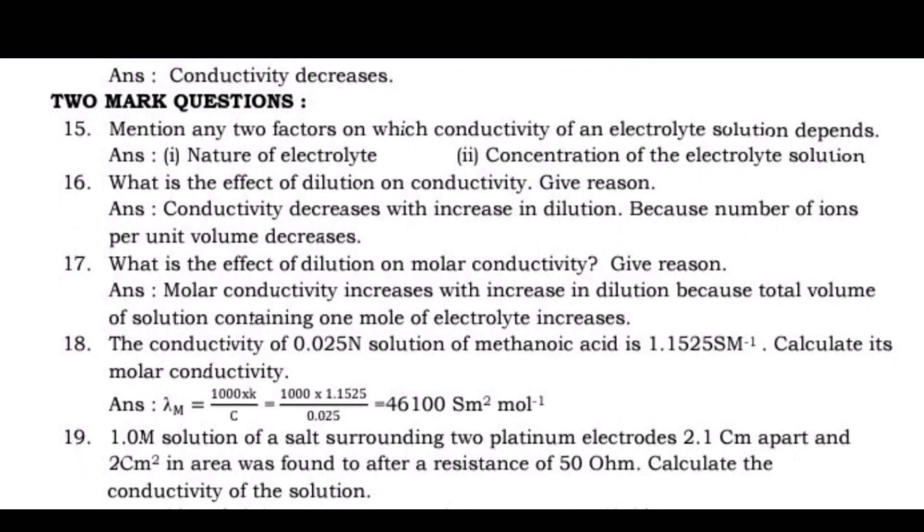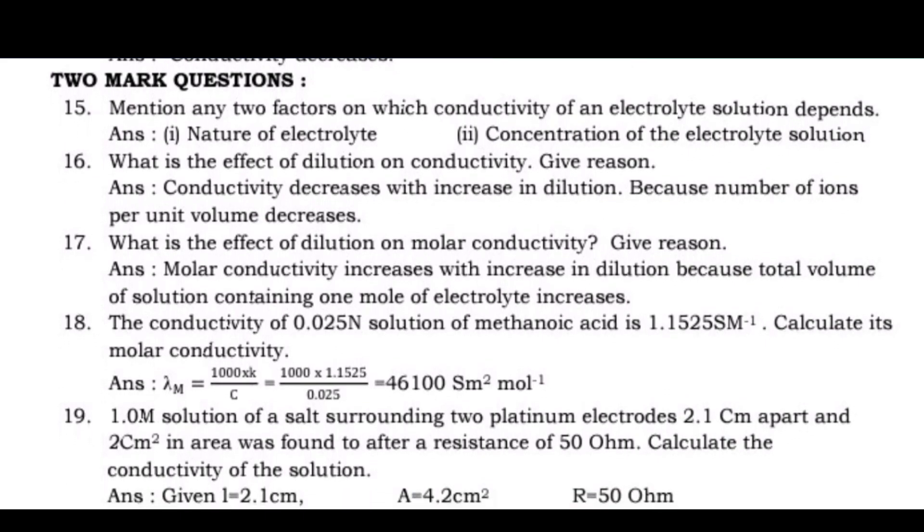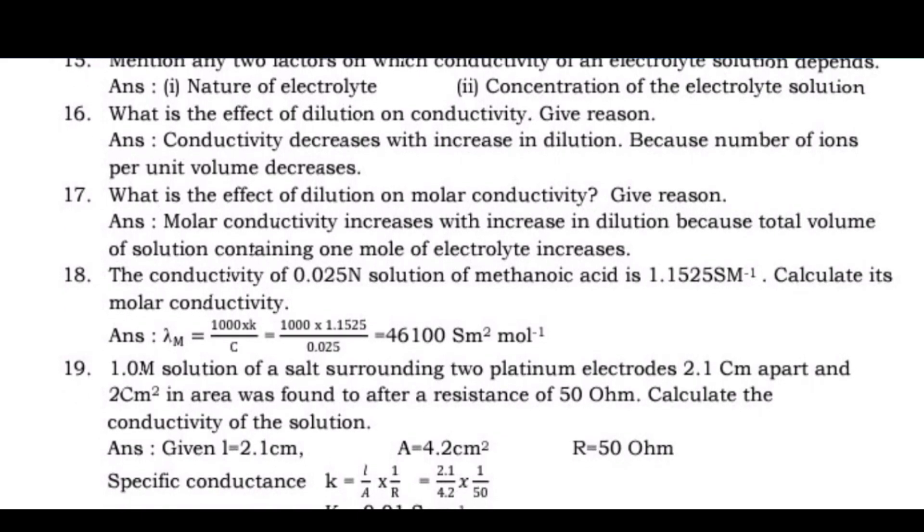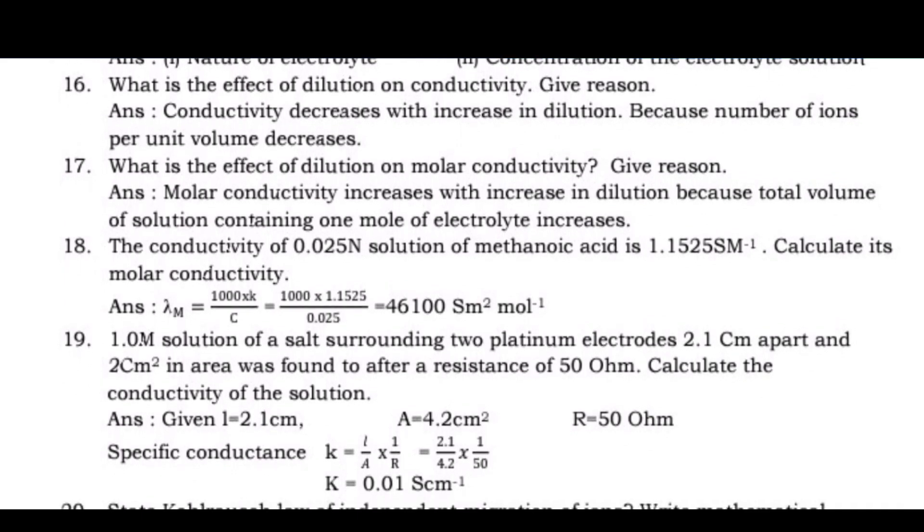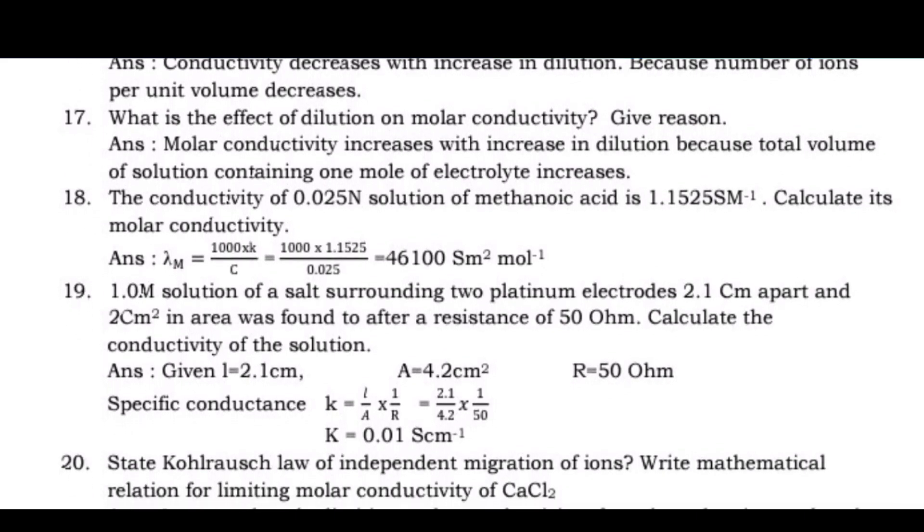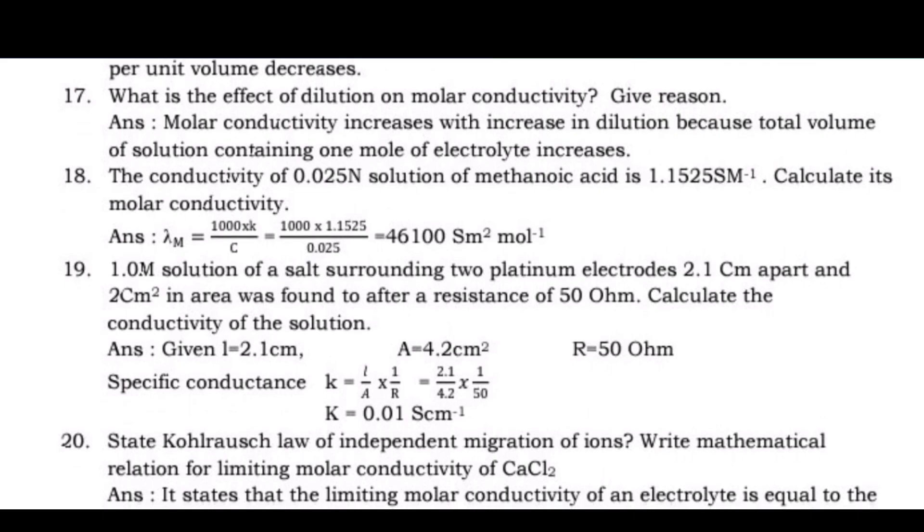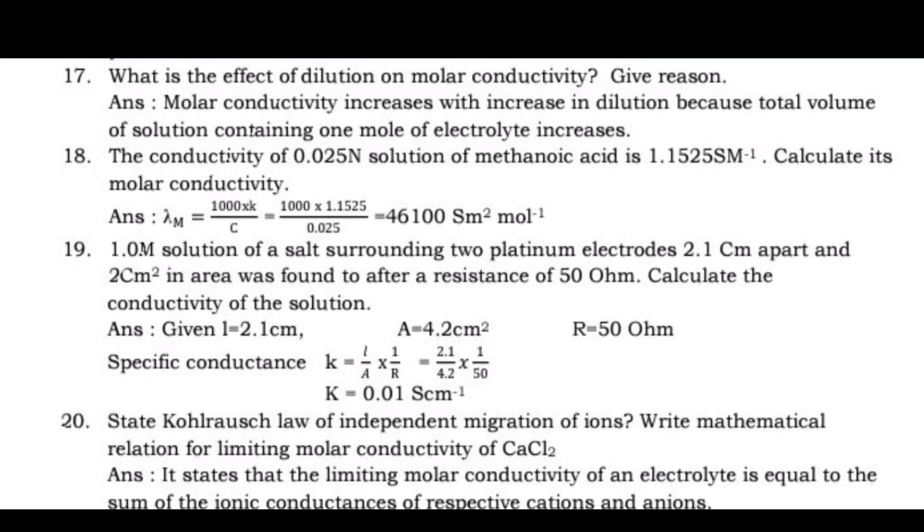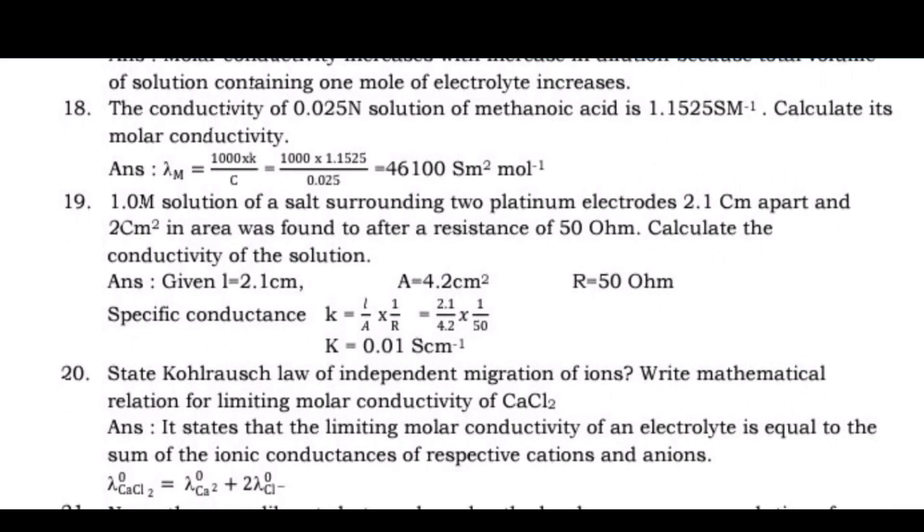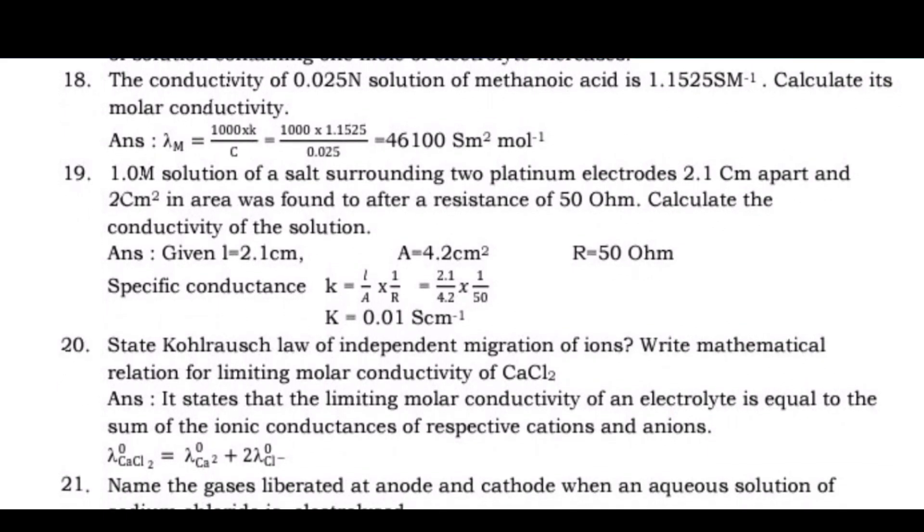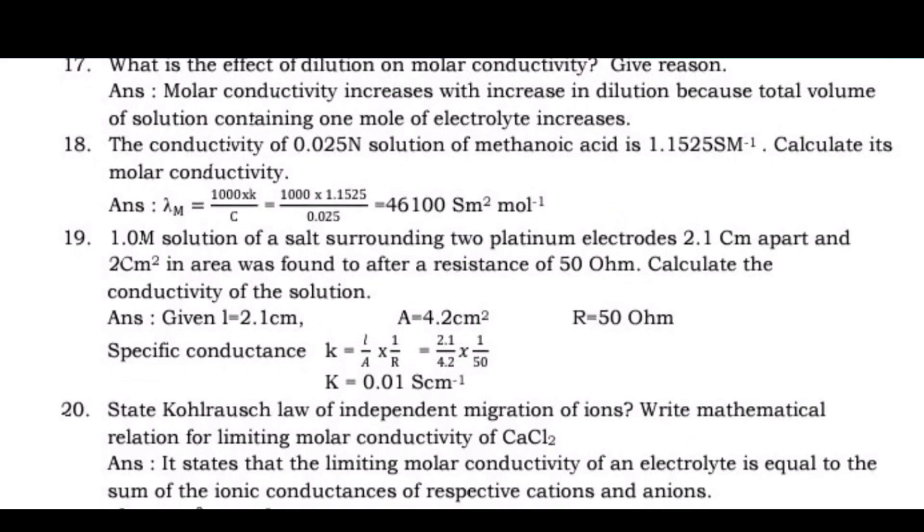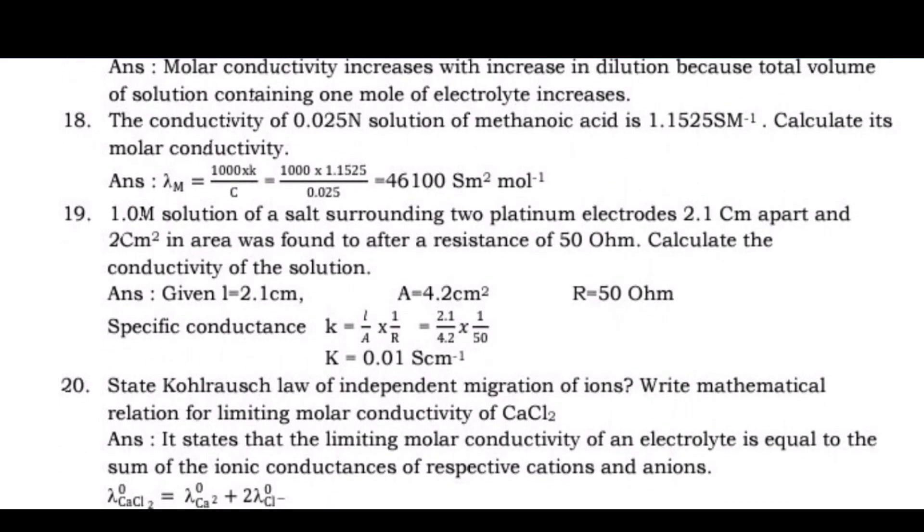Question 17: What is the effect of dilution on molar conductivity? Give reason. Answer: Molar conductivity increases with increase in dilution because total volume of solution containing 1 mole of electrolyte increases. Question 18: The conductivity of 0.025N solution of methanoic acid is 1.1525 Sm⁻¹. Calculate its molar conductivity. Answer: (1000 × 1.1525)/0.025 = 46100 Sm²mol⁻¹.